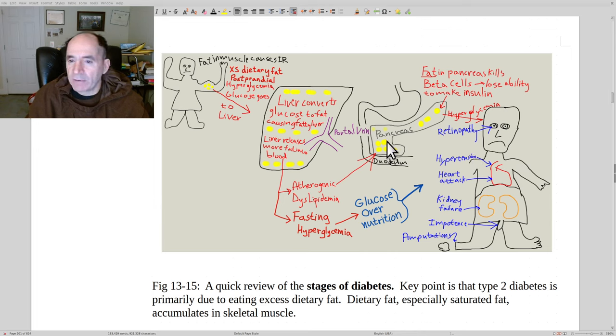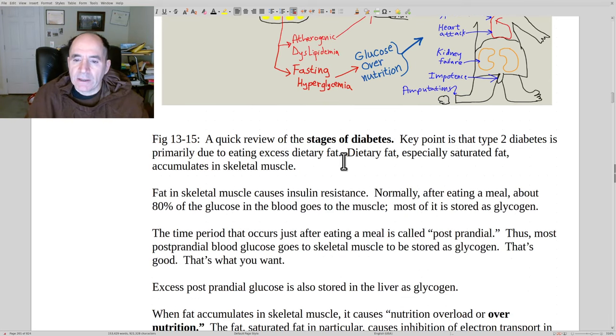Eventually, this hyperlipidemia will lead to excessive lipid being laid down in the pancreas with additional secondary complications. The excess fat in the pancreas will damage the pancreatic beta cells. Once they lose their ability to make insulin, the person becomes fully insulin dependent. But again, the key point is that it's all this fat that is the main problem in diabetes, excessive dietary fat intake.